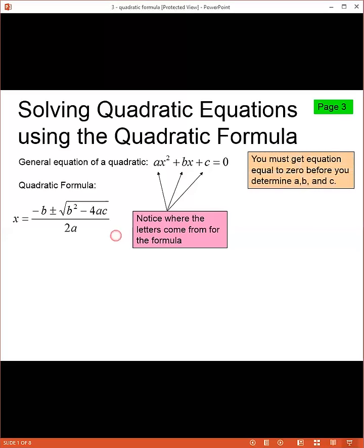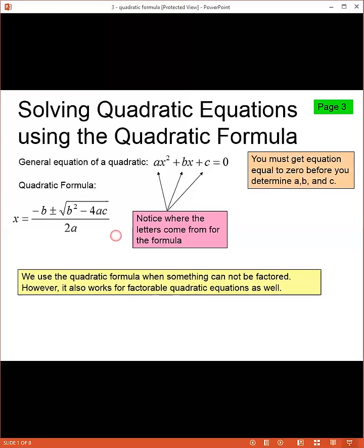You must get the equation equal to zero before you can decide what a, b, and c are. And of course this works when something cannot be factored. However, it does work even if the equation could be factored first.